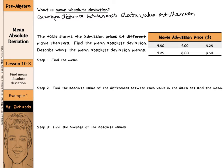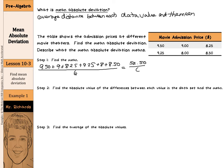The table shows the admission prices at different movie theaters. Find the mean absolute deviation and describe what the mean absolute deviation means. First, find the mean. So we'll take $9.50 plus $9 plus $8.25 plus $9.25 plus $8 plus $8.50, and we'll divide that by the number of data values we have, which is 6. The numbers on top add to be $52.50, and then we divide that by 6, we get a mean of $8.75.